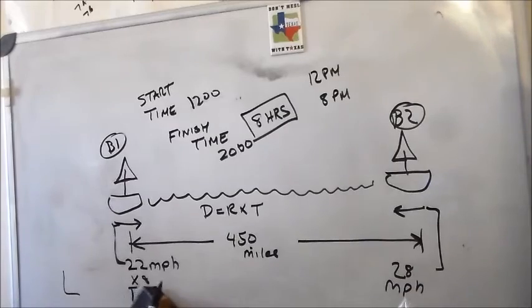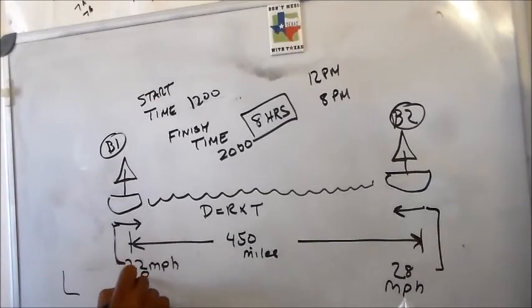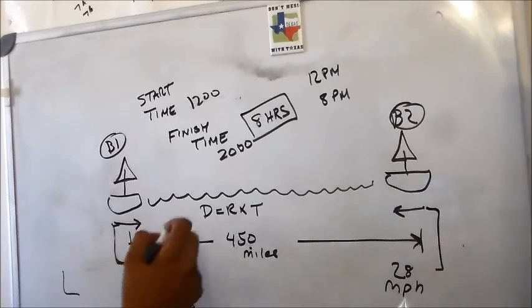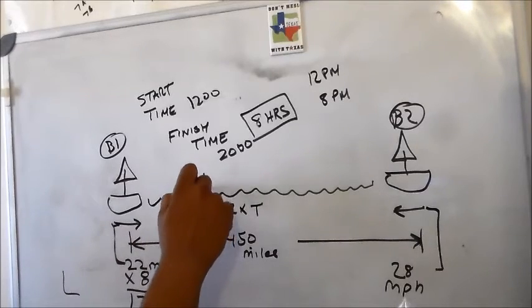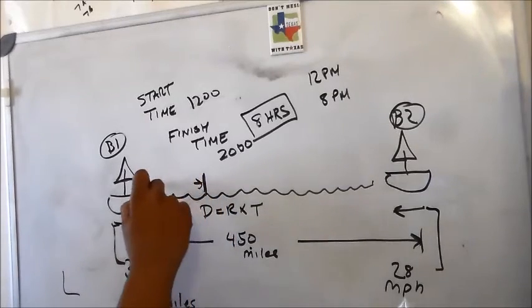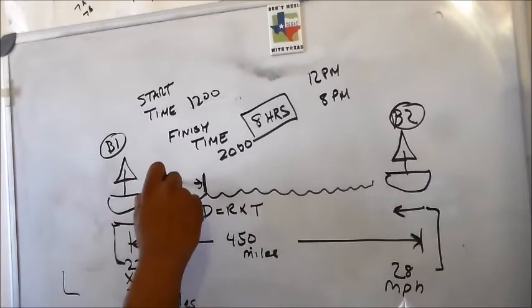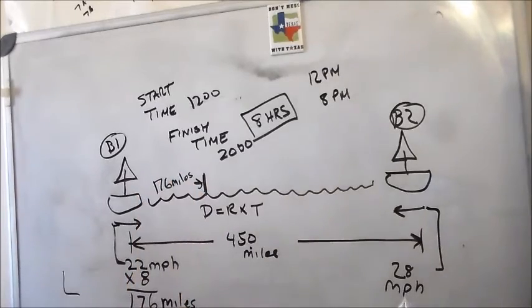Hold on, moving a little bit too fast. That happens. Slow down, Keno. 8 times 2, 16. 176. So boat 1 has moved in after 8 hours, 176 miles.